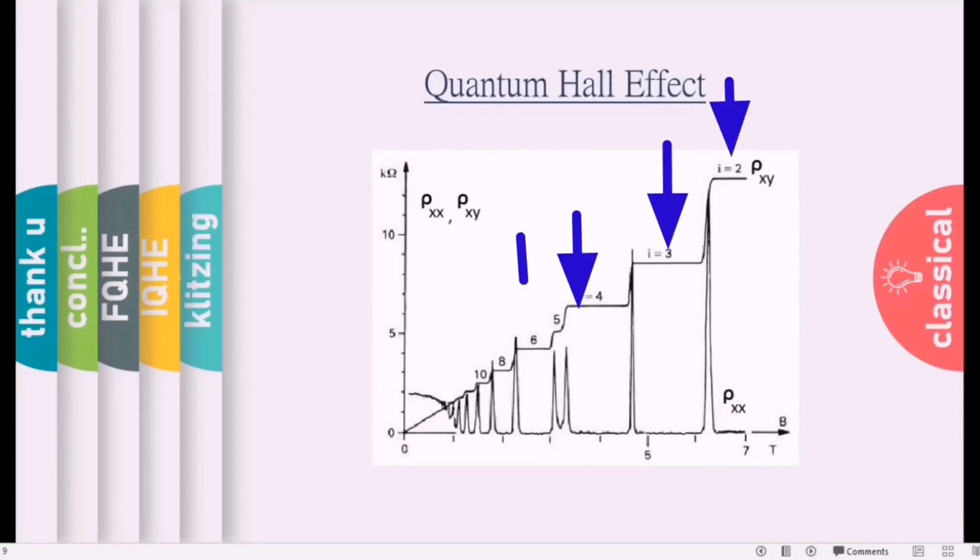The Hall resistance as a function of magnetic field was a straight line according to classical Hall effect, but here it is not a straight line. There are plateaus at some integer values: i equals 2, i equals 3, i equals 4 and 5 and 6 and 8 and 10, and so on. So the Hall resistivity is in the order of h over e². Here the Hall resistivity is 2h/e² at this point, it is 3h/e², here it is 4h/e² and so on. You can clearly see the plateaus for ρxy.